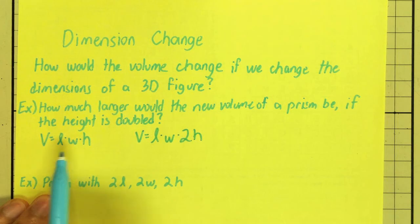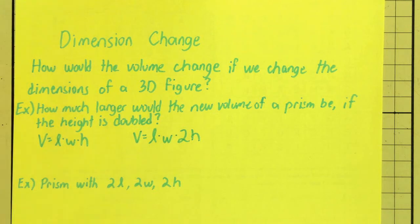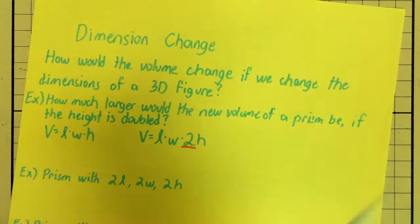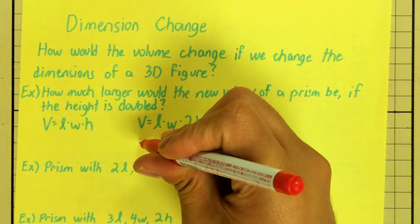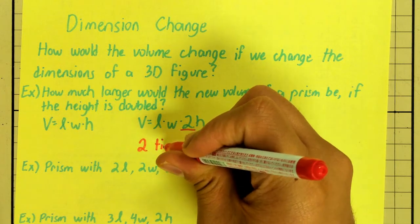Which, comparing my original formula with the new formula, I see that this 2 is different right here. So, this lets us say that the new volume is 2 times bigger.